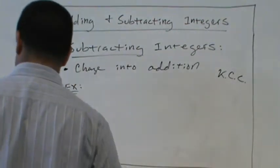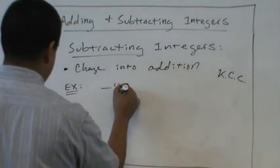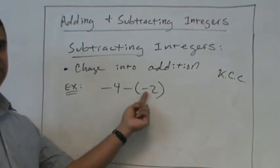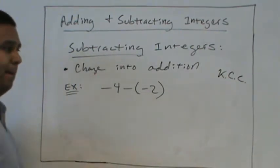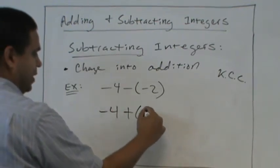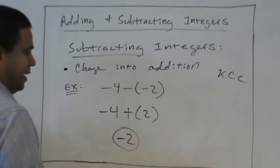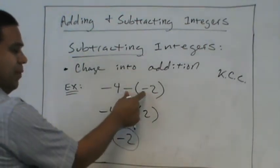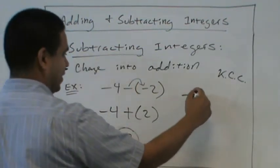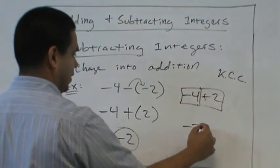And the last one. What if we have negative 4 minus negative 2? How do we do that? Keep? Change? Change. Change. It would be negative 2. Or, like before, right? Negative times that negative makes it a positive. You box them up. We're good.